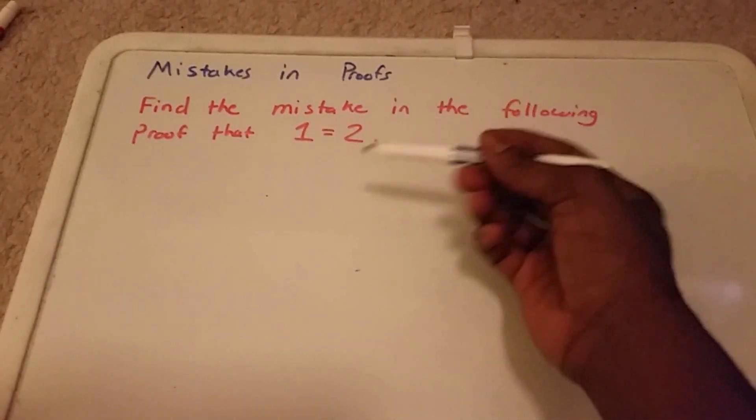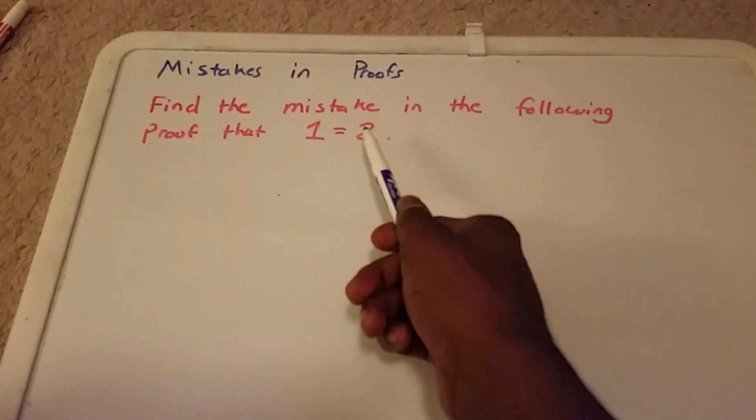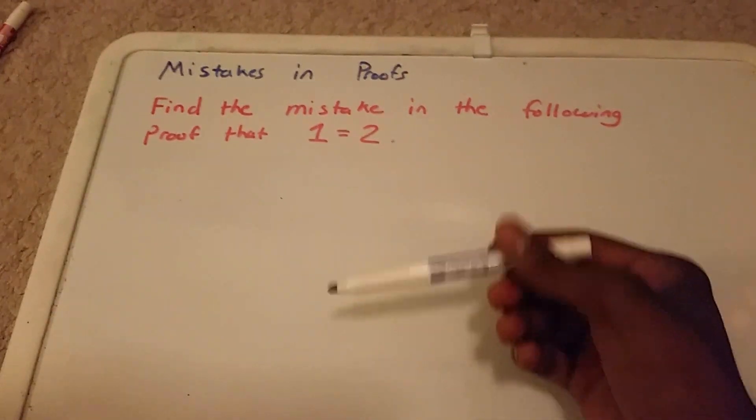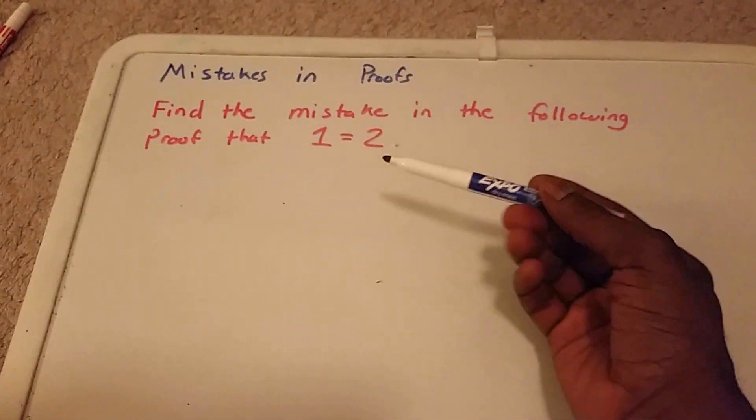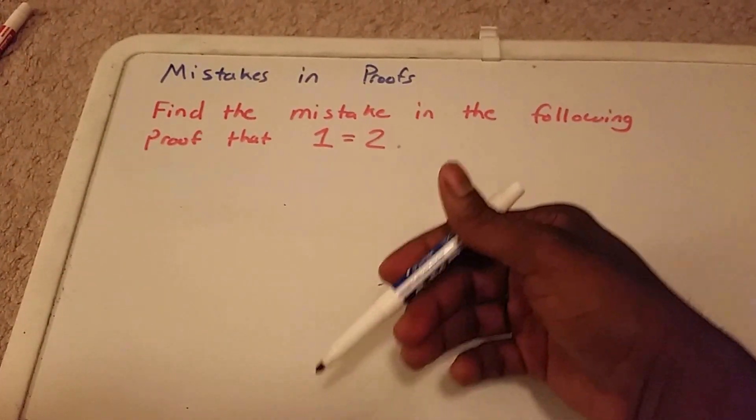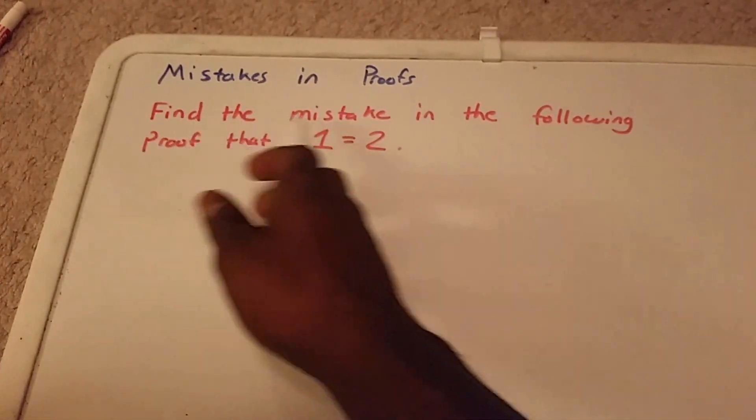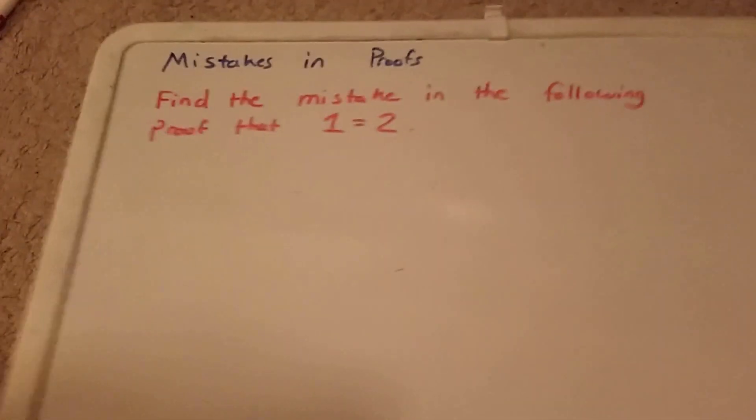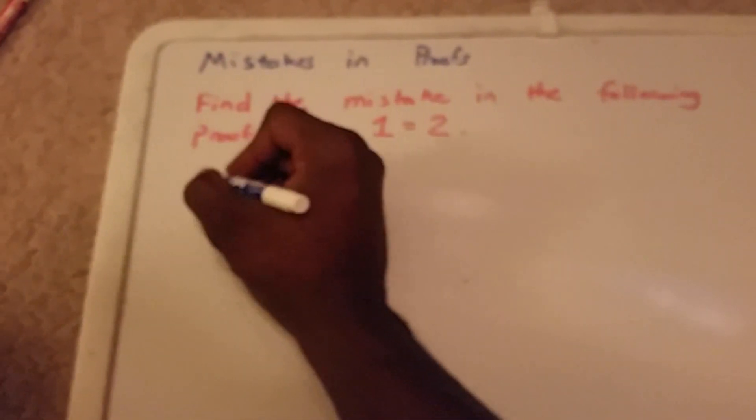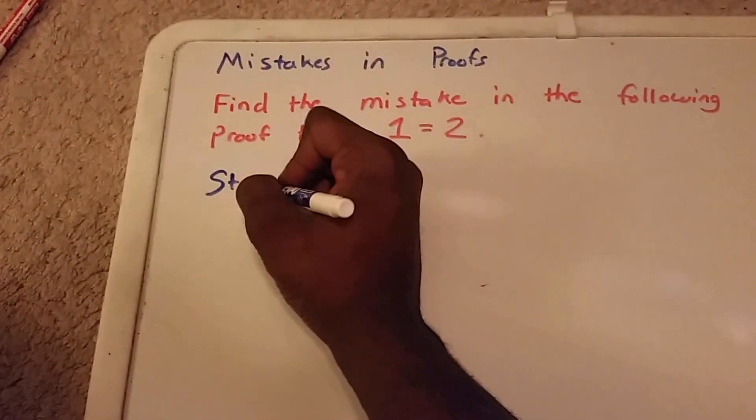Hey guys, so I saw some videos proving that 1 equals 2, so I want to point out some mistakes in proofs. Here we have a problem that says find the mistake in the following proof that 1 equals 2. Let's see if you guys can figure it out. I'm gonna put the steps that I use here.